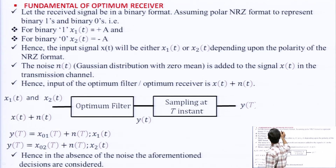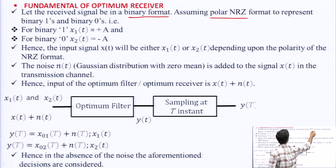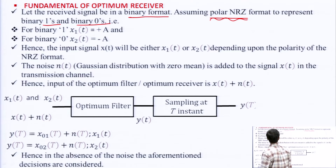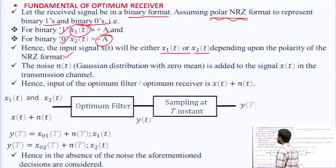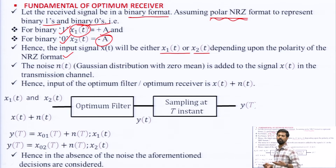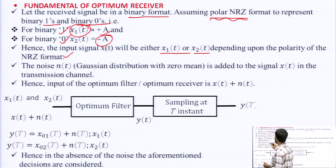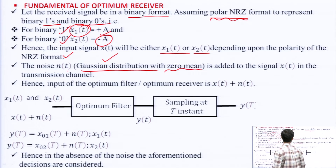Let the received signal be in binary format, assuming polar NRZ format. For binary 1, signal x1(t) = +a; for binary 0, it is x2(t) = -a. Hence the input signal x(t) will be either x1(t) or x2(t) depending upon the polarity. The noise n(t) follows a Gaussian distribution with zero mean and is added to the signal x(t) in the transmission channel.